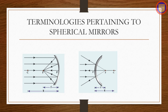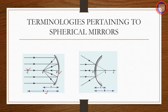Terminologies for spherical mirrors: the center of curvature C is the center of the sphere of which the mirror is a part. The radius of curvature R is the radius of that sphere. The pole P is the middle point or geometrical center of the spherical mirror surface. The principal axis is the line joining the pole and the center of curvature. The focal point is the point on the principal axis where rays parallel and close to it converge (concave mirror) or appear to diverge from (convex mirror) after reflection. This point is called the focal point of the mirror.